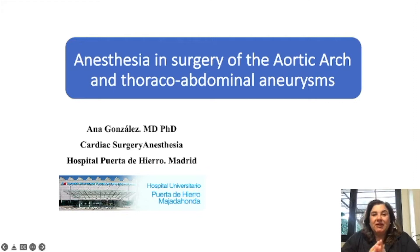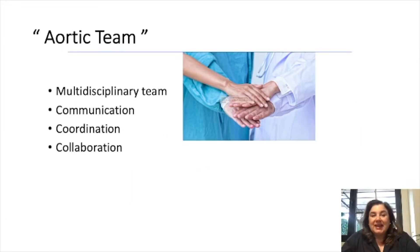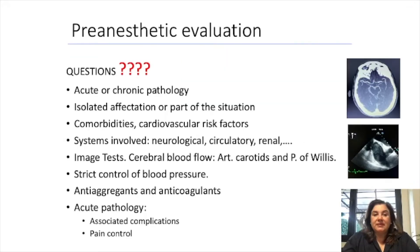I'm going to talk about anesthesia and surgery of the aortic, heart and thoraco-abdominal aneurysm. It's really important to have an aortic team — a multidisciplinary team with good communication, coordination and collaboration — and some questions about pre-anesthetic evaluation.